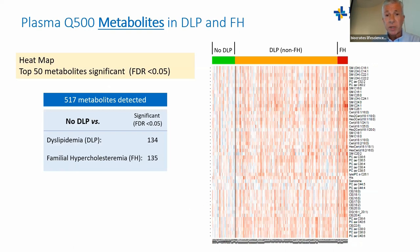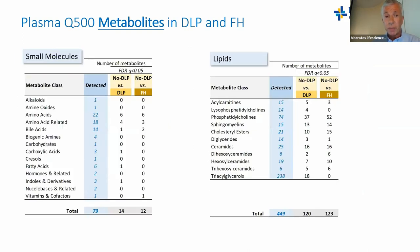The first results: a heat map of the top 50 significant metabolites across the three groups — no dyslipidemia, dyslipidemia non-FH, and FH. Compared to the no-dyslipidemia group, we found 134 metabolites different versus dyslipidemia and 135 different in familial hypercholesterolemia.